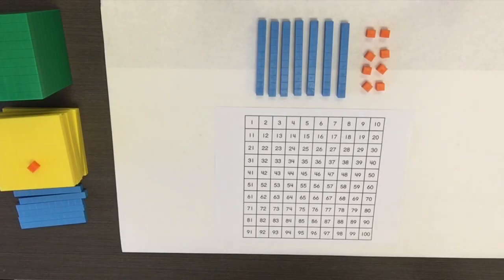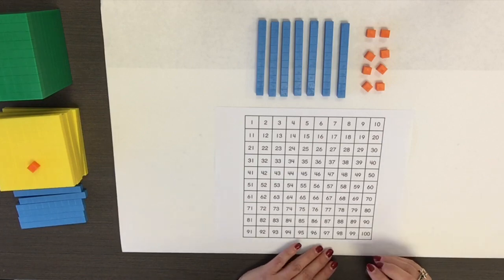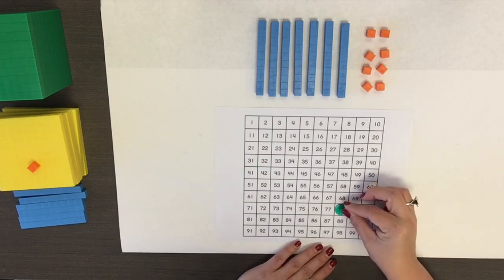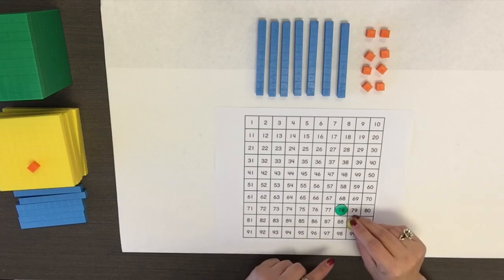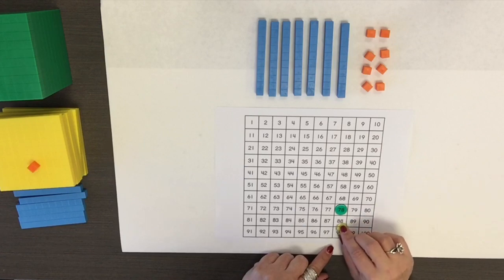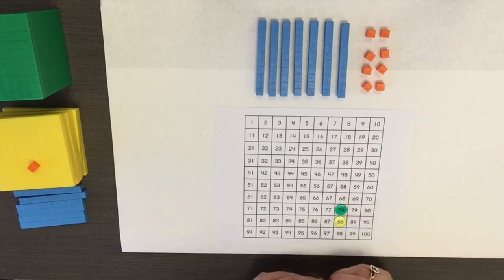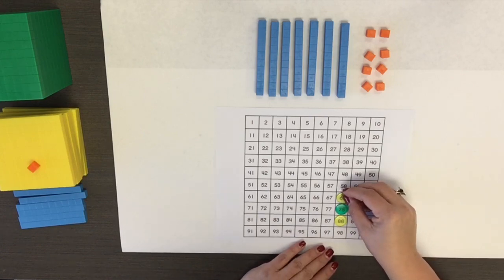For this section, the focus will be patterns using 10 more, 10 less. Using a number chart, mark a number such as 78 with a color counter. When determining the number that is 10 more or 10 less, be sure to remind students that the digit in the tens place increases by one when you move to the bottom, so the tens digit would increase by one, 78 to 88 for 10 more. And when you move to the top for 68, the digit in the tens place decreases by one.